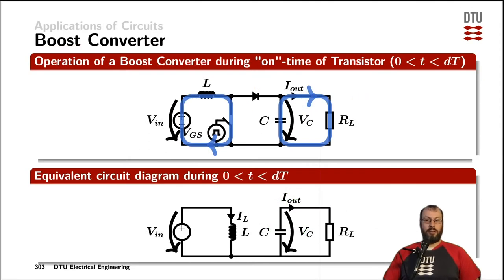When the switch is turned on in a boost converter, it is short circuiting the right hand side of the inductor to ground and therefore the inductor is in parallel with the input voltage source. As this node therefore is zero volts, the diode is blocking and the capacitor is providing the current required by the load.